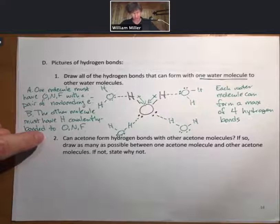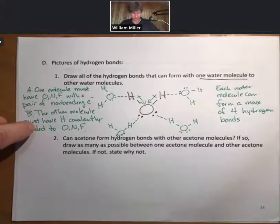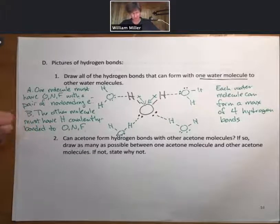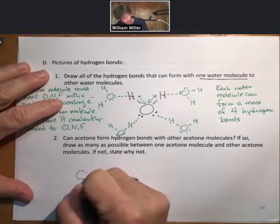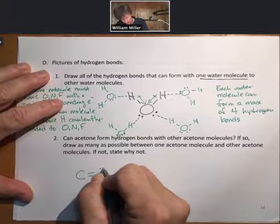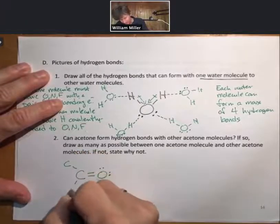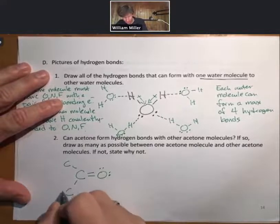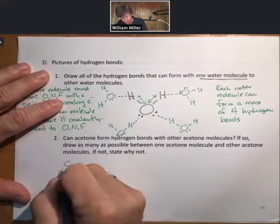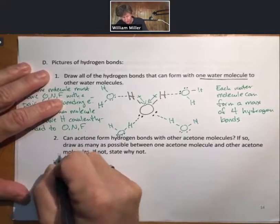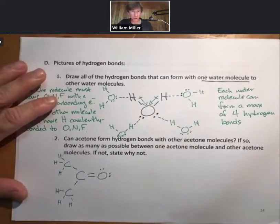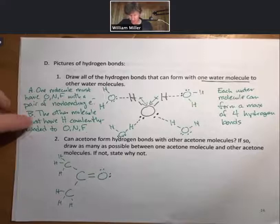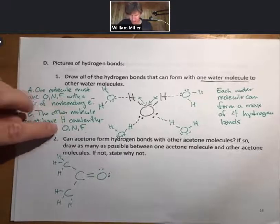Can acetone form hydrogen bonds with other acetone molecules? If so, draw it, and if not, state why not? Well, let me draw you an acetone molecule. It's got three carbons. It's got six hydrogens. But none of those hydrogens are covalently bonded to O, N, or F.